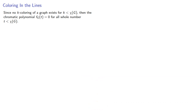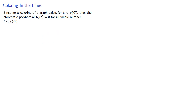Since no k-coloring of a graph exists for k less than the chromatic number, the chromatic polynomial will be zero for all whole number t less than the chromatic number. So if we know the chromatic polynomial for our graph, we know its chromatic number.